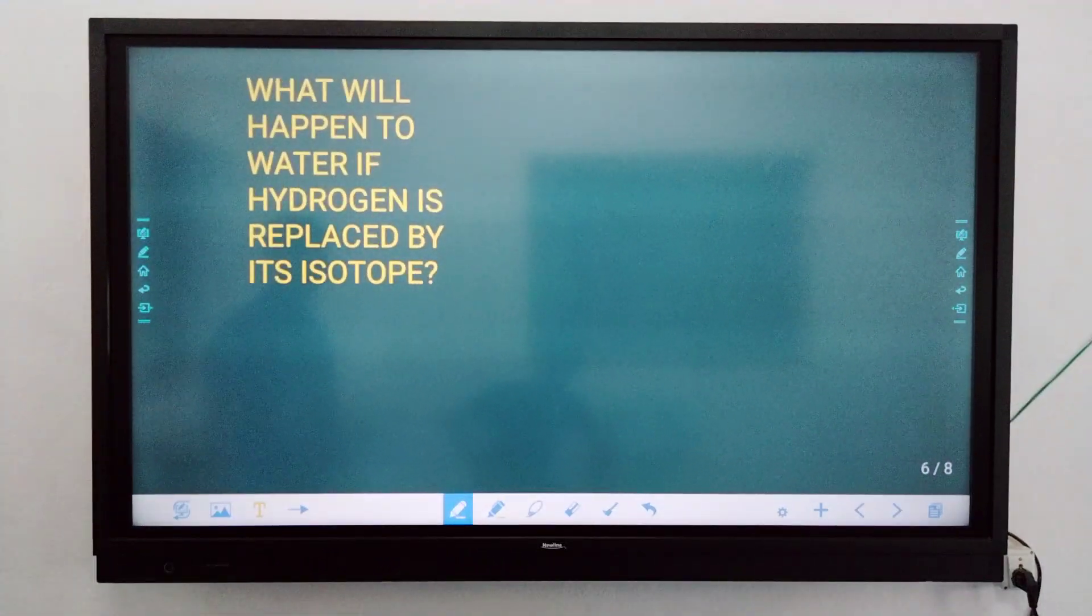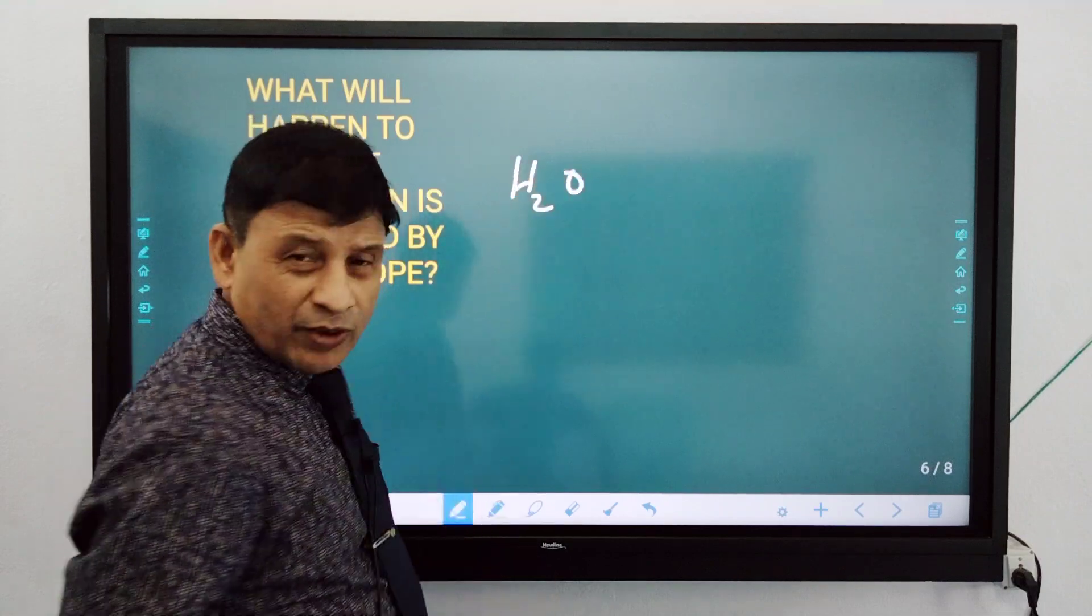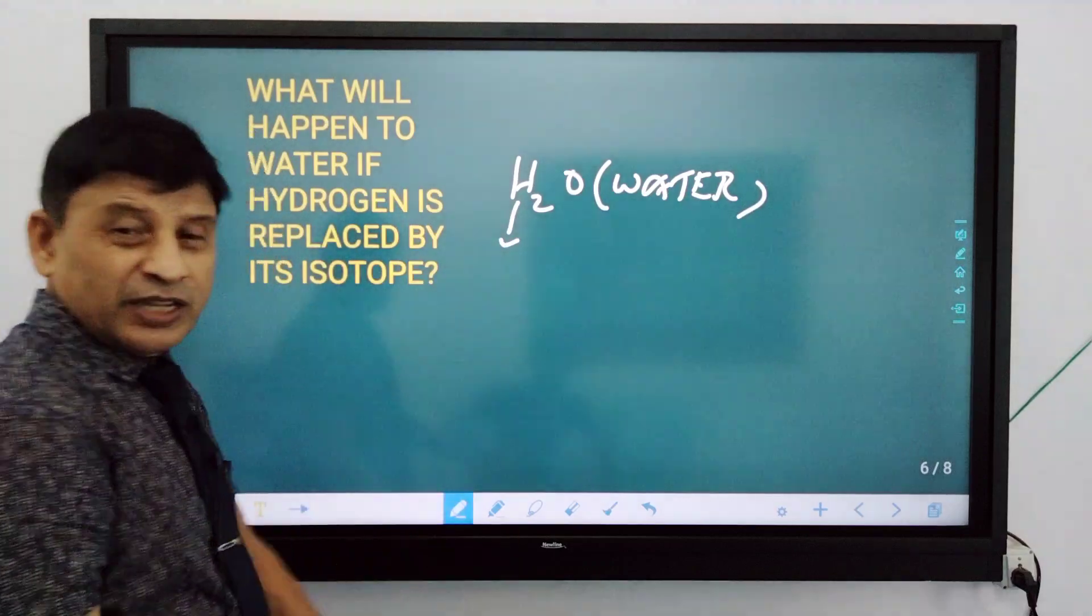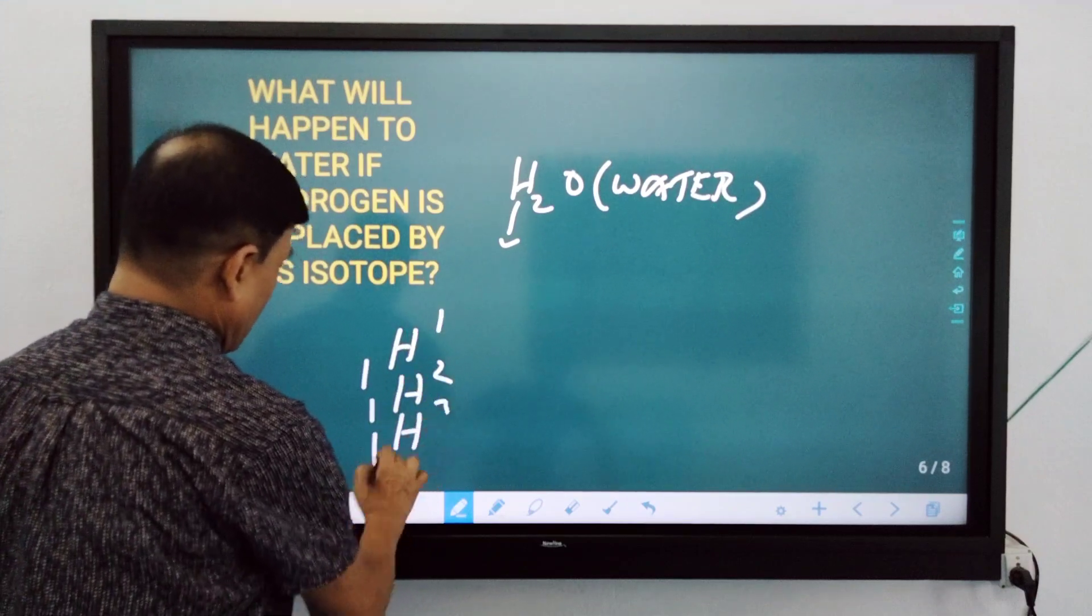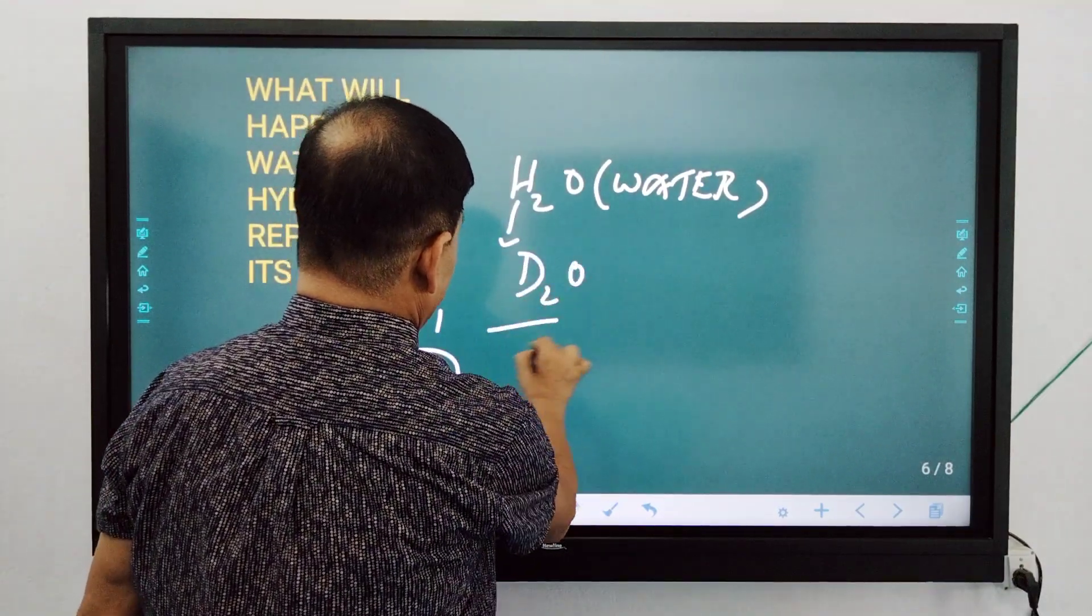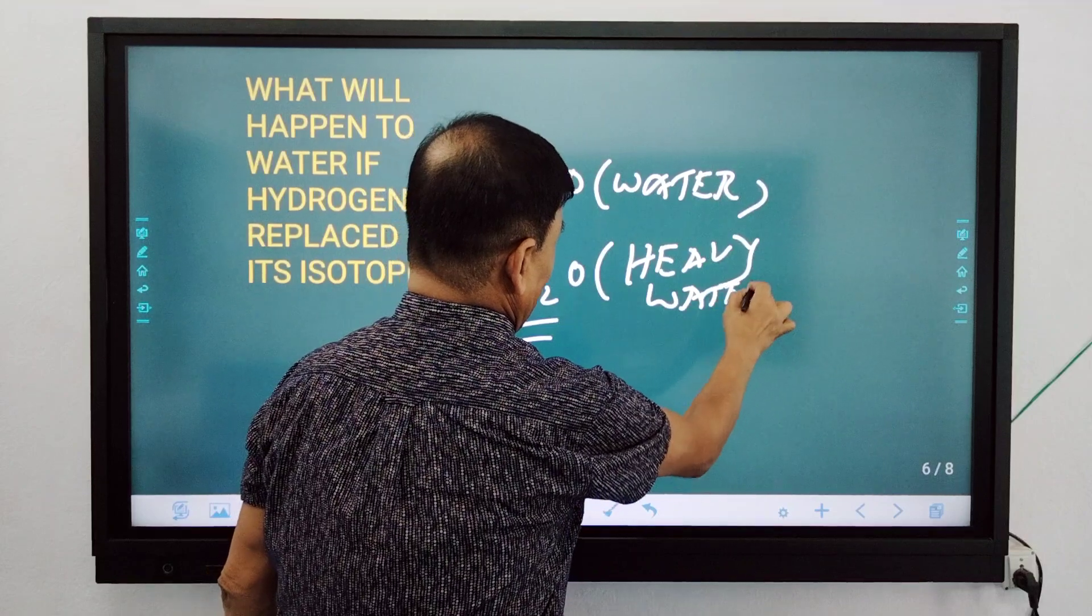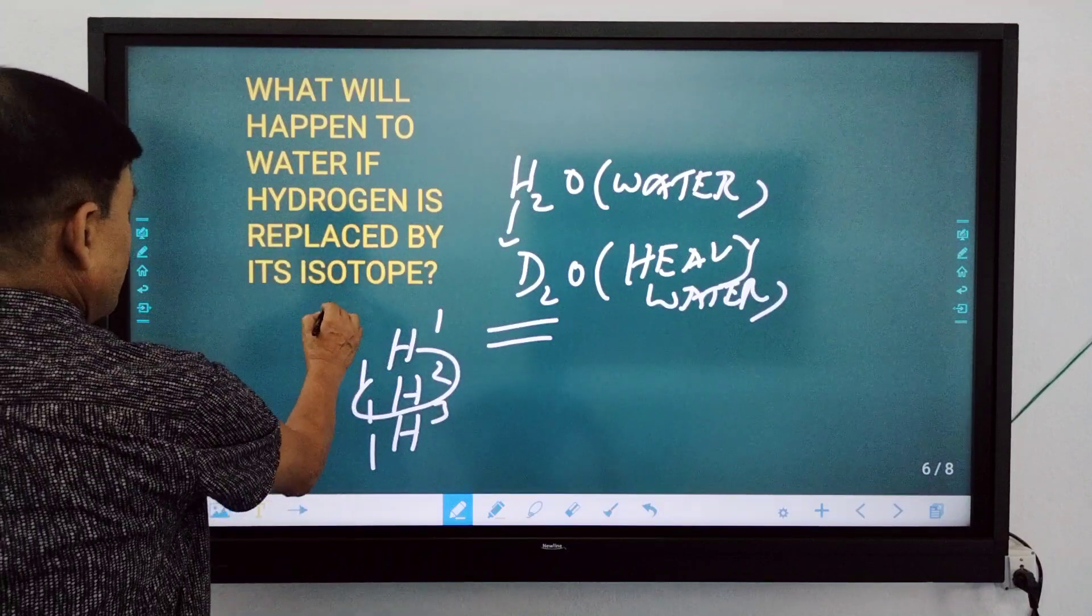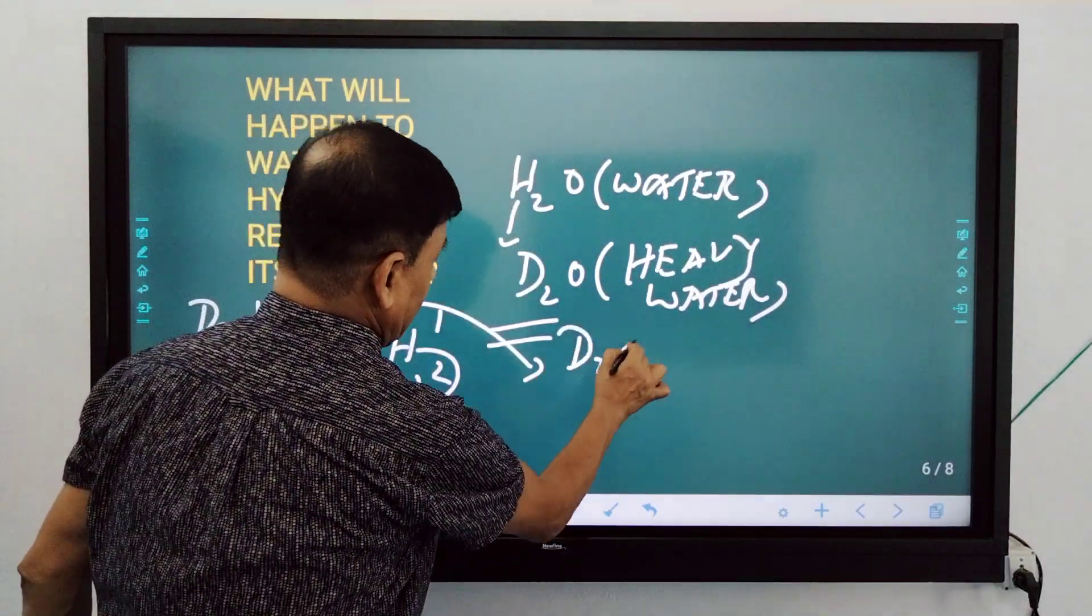What will happen to water if hydrogen is replaced by its isotope? Very tricky question. If we talk about water, if we replace hydrogen with its isotope like deuterium, you will get D2O. This is called deuterium oxide or heavy water. If water's hydrogen is replaced by isotope deuterium, we get deuterium oxide, which is called heavy water.